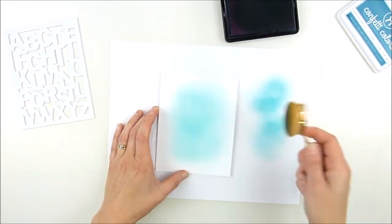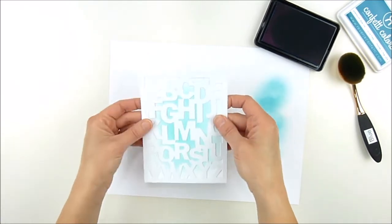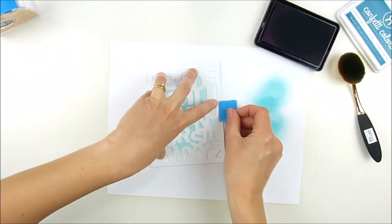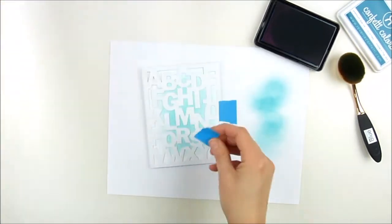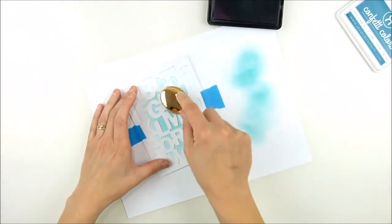I'm inking up my brush and making sure I get some of the ink off on a little bit of white computer printer paper that I have underneath my image. Now I'm going to lay my stencil over, use a little post-it tape to hold it in place.